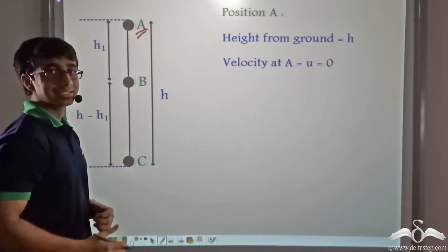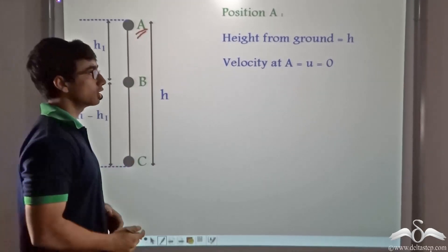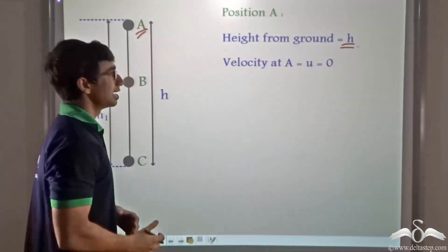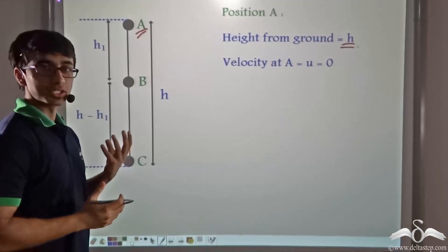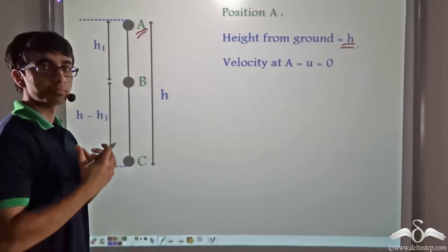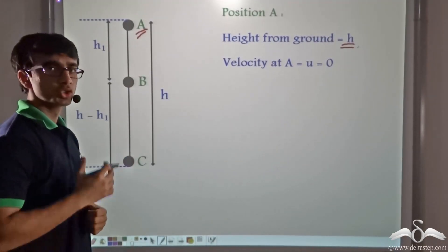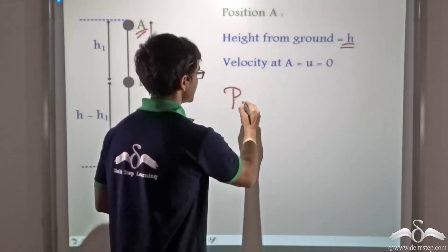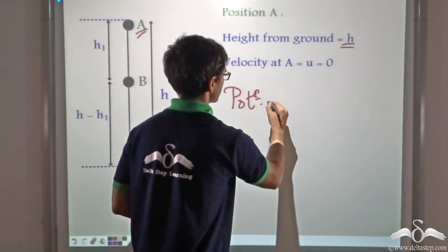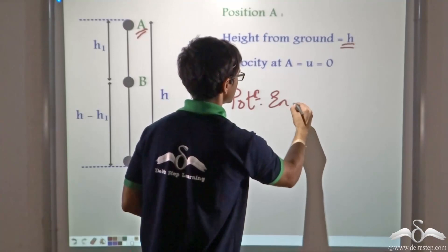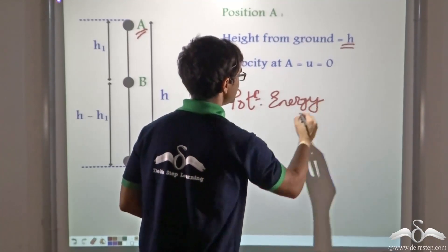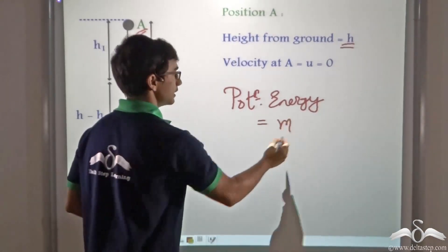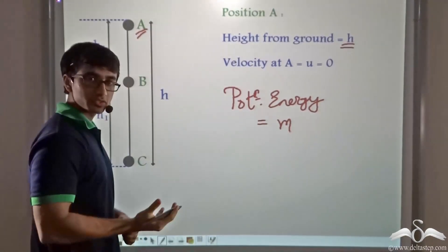the height of the ball is H from the ground, and the velocity at A is zero because the ball has been kept at rest. So what can we say? We can say that the potential energy, given by MGH, will be M — that is the mass of the ball — times G, the acceleration due to gravity, times H, the height of the ball from the ground.